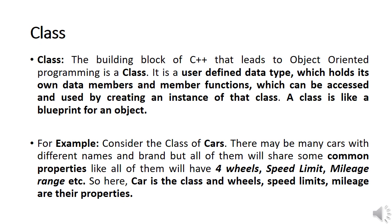For example, suppose we take cars as a class. There are many cars available in the market with different names and brands, but all of them have some common features or properties like four wheels, speed limits, mileage, etc. So a car is the class, and wheels, speed limit, and mileage are its properties.